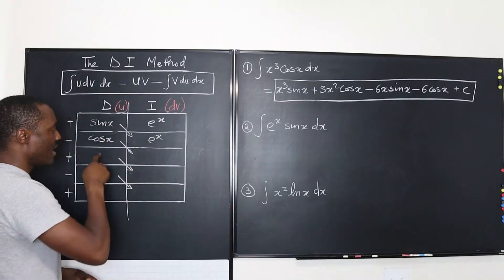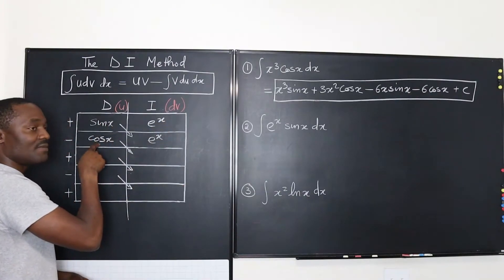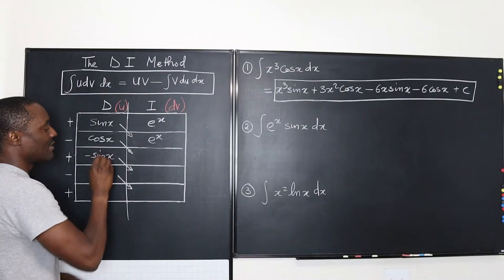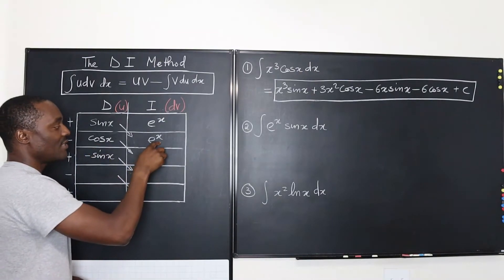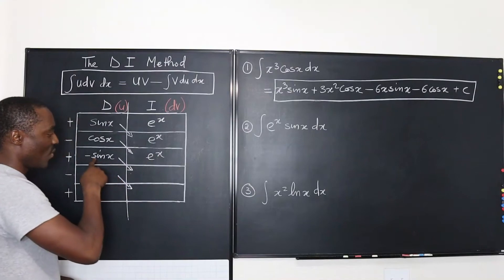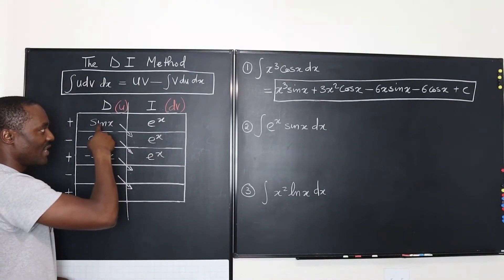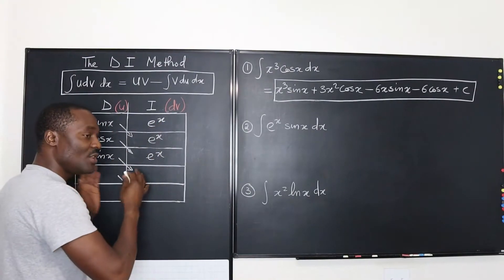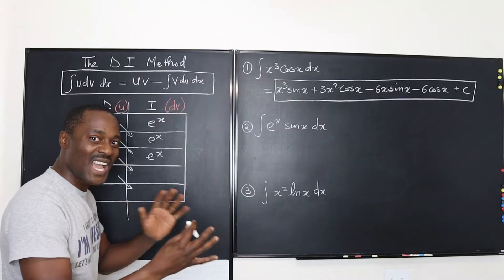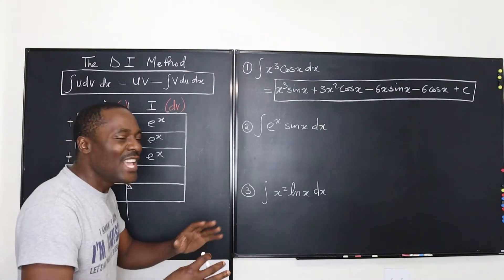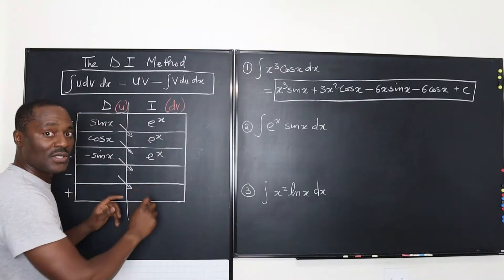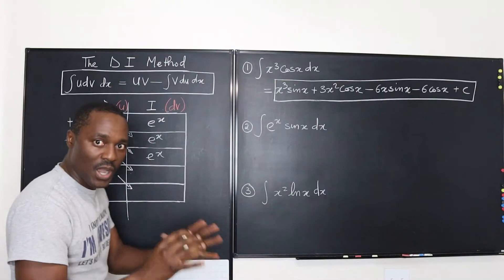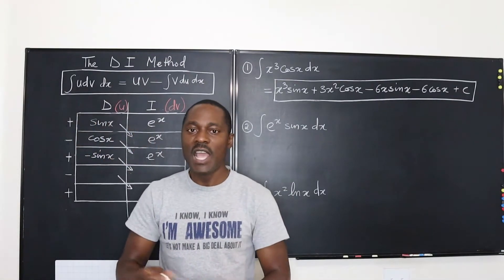If I differentiate cosine X, I get negative sine X. If I integrate E to the X, I get E to the X. This line looks like the original line. Even if you have numbers or signs that are different, it doesn't matter as long as the main functions are the same — you just stop there. So now I have stopped.